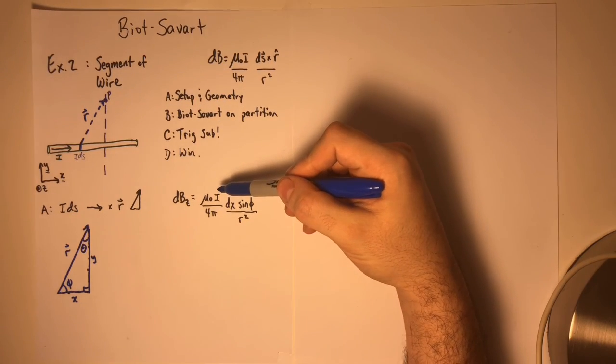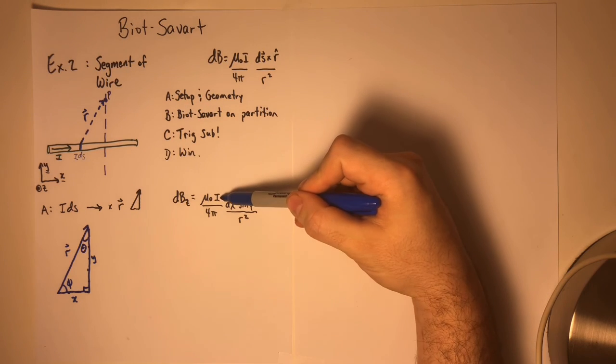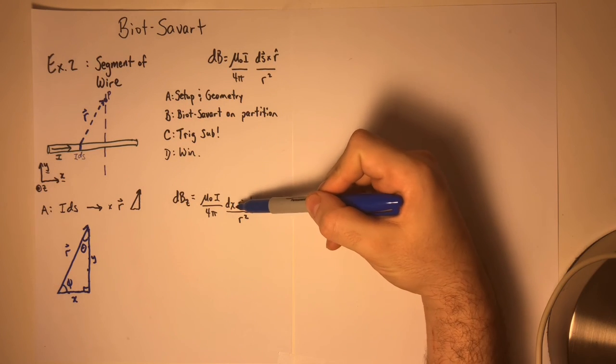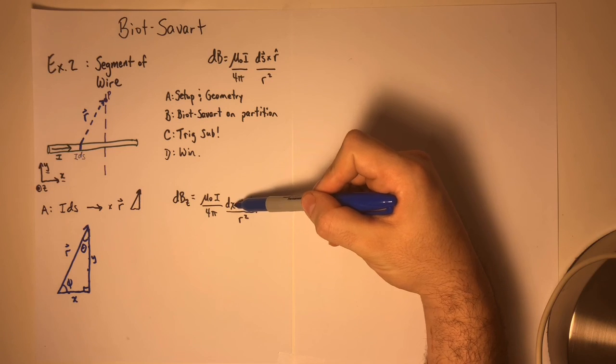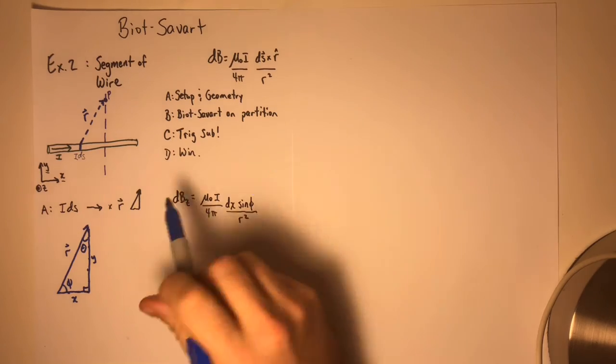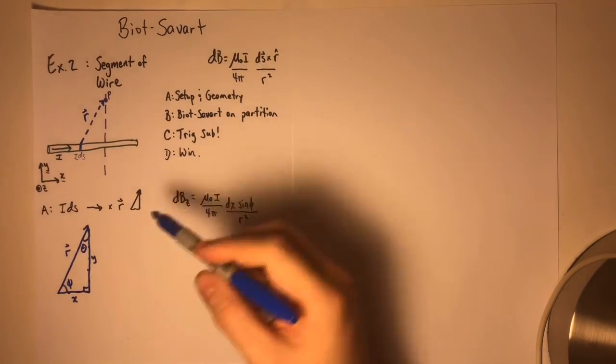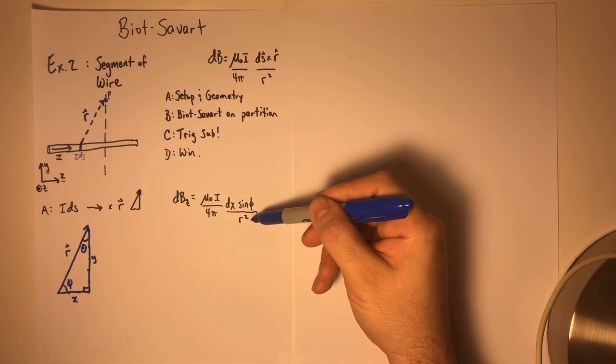So when I rewrite the Biot-Savart law, we're left with the constants as they always were. We have the current element IDS, but now we've indicated that it points along the X direction. So I'm going to call it DX. We have a sine phi that comes from the cross product itself. I'm going to rewrite that in terms of these quantities. And we've got the formula 1 over R squared.